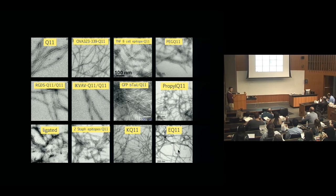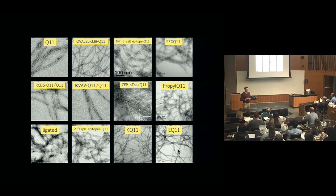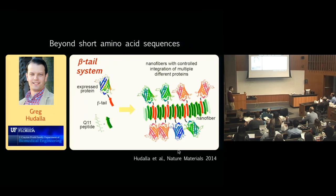Over the years we have appended Q11 with many different immune epitopes — B-cell epitopes, T-cell epitopes, cell binding ligands, and polymers for changing the chemical and physical properties of the fiber surface. Every time we engineer a new variant, we're always surprised at just how tolerant this peptide is at assembling when it has cargo attached to it. We have found the edges of what it can tolerate — high amounts of charge, for example multiple lysines, will start to prevent these fibers from forming.